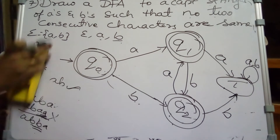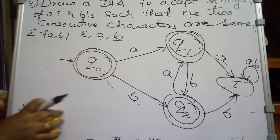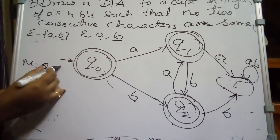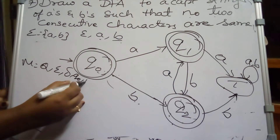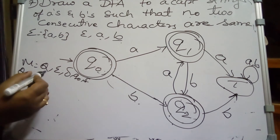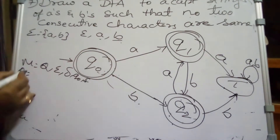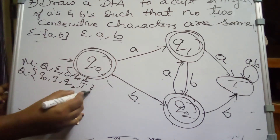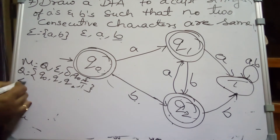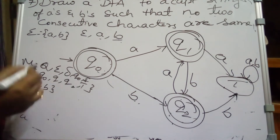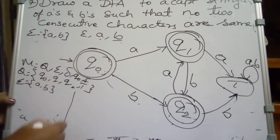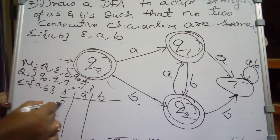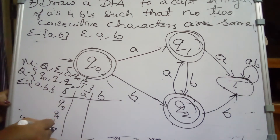Now we write the formal machine M. M = (Q, Σ, δ, Q0, F). Q is the set of states: Q0, Q1, Q2, and trapped state T. The alphabet set Σ = {A, B}. The transition function δ has inputs A and B for each state Q0, Q1, and Q2.